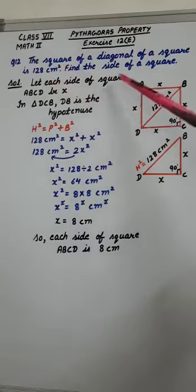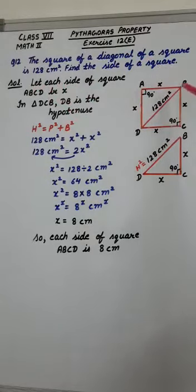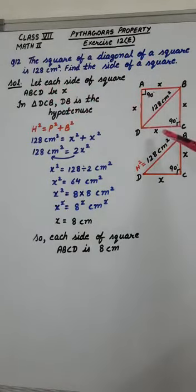So first of all, let each side of square ABCD be X. So here we have taken all sides as X.